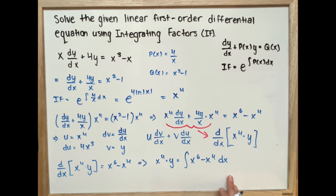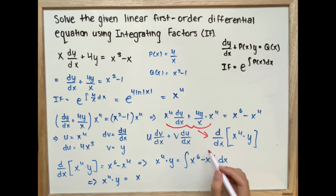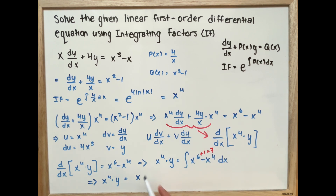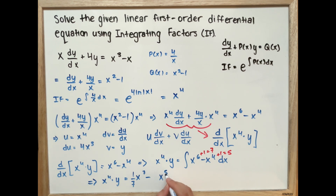This is a simple integral we can go ahead and solve. We get x to the power of 4 times y equals x to the power of 7 times 1 over 7, minus x to the power of 5 times 1 over 5, plus C.